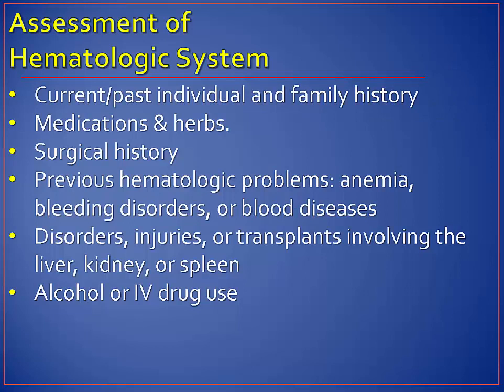A health history for the hematopoietic system consists of demographic data, current health, past health history, past and current use of medications, surgical history, herbal preparations, and nutritional supplements. It would also include family health history and review of systems using functional health patterns. A complete medical history should include the use of prescriptions, over-the-counter drugs, vitamins, herbal products, and dietary supplements, as many have the potential to interfere with normal hematologic function.